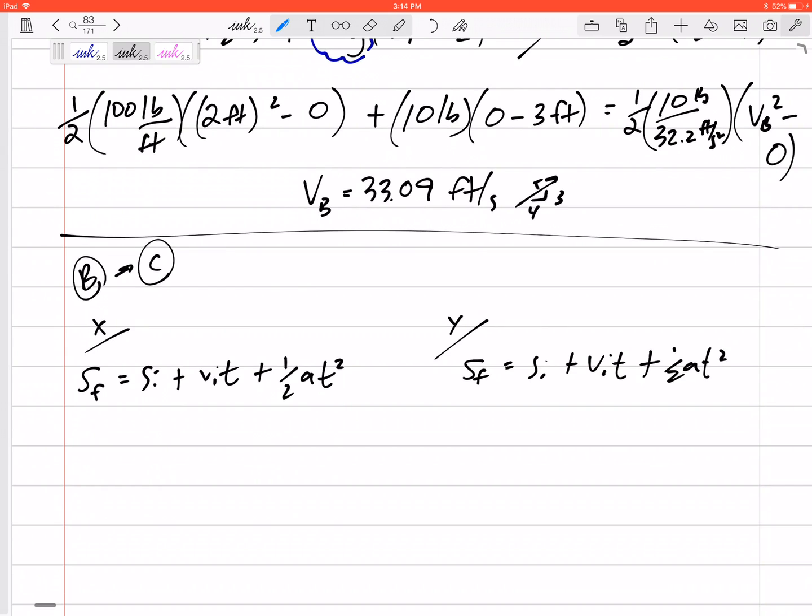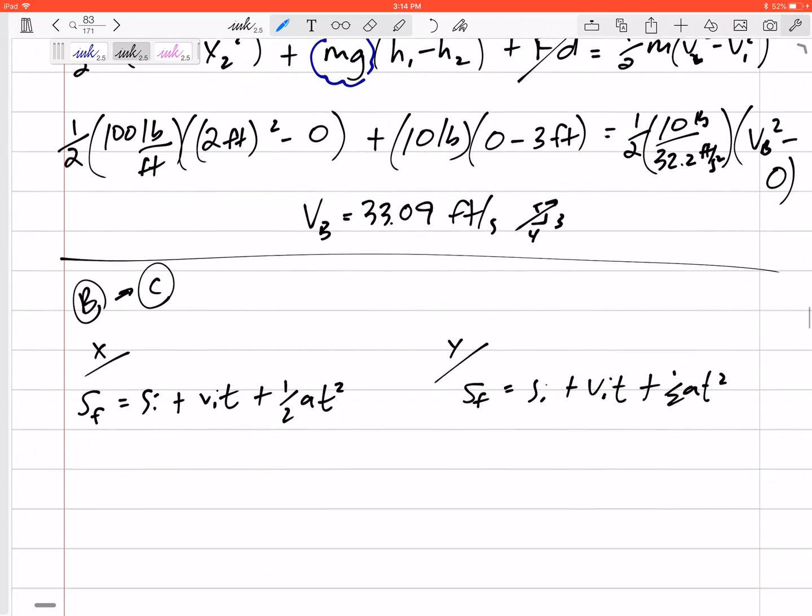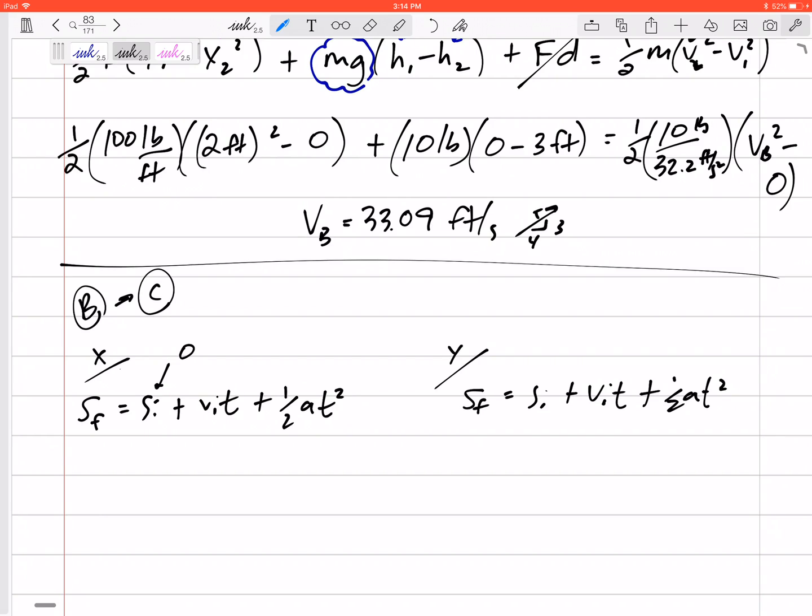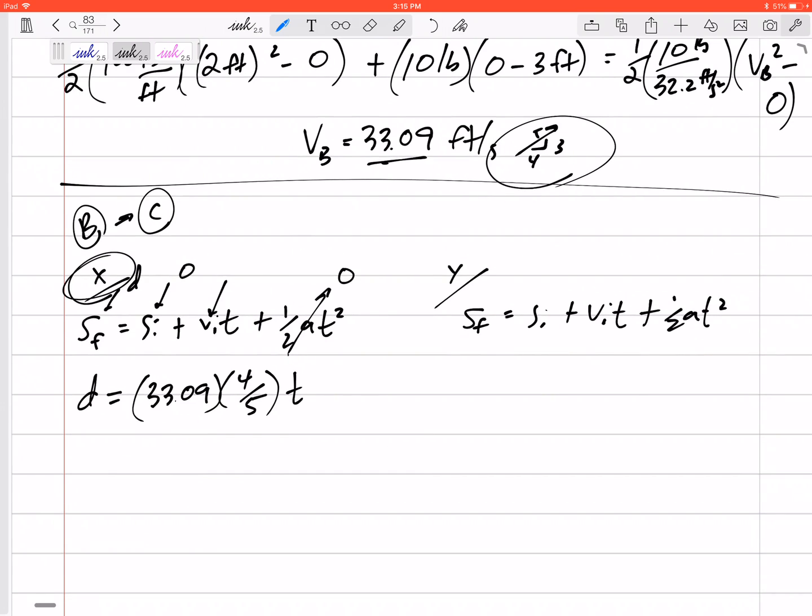SF equals S initial plus VIT plus one half AT squared. Alright, so in the X direction, where is it going? It's going from, we'll call this our zero, it's going to D. It's going to D. So D, alright, and now what is this V initial? That would be 33.09, but I'm only the X direction. So the 33.09, the four fifths component times T. Don't forget that T. The acceleration in the X direction is zero. Alright, so I've got an equation right here. D is 33.049 times four fifths.